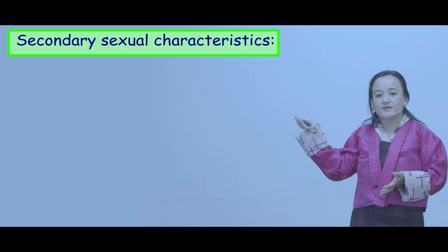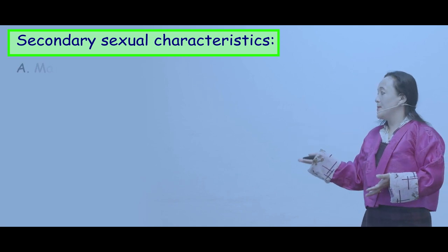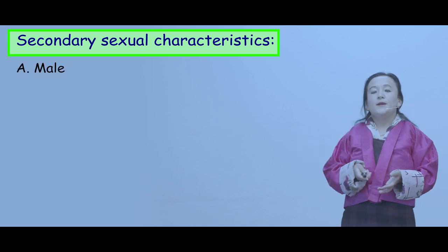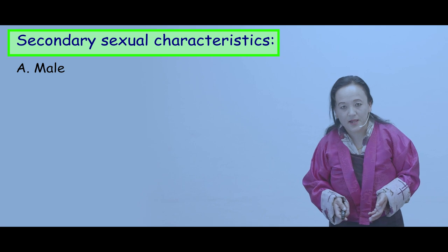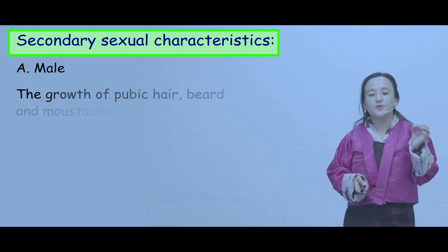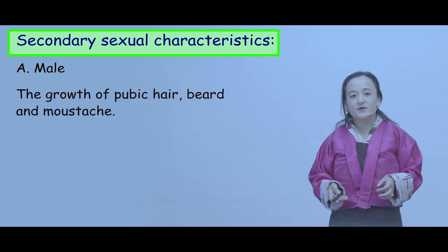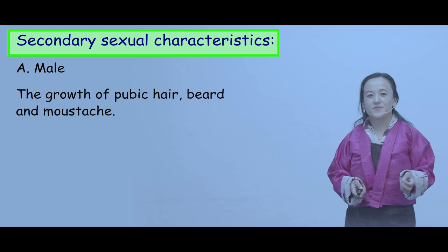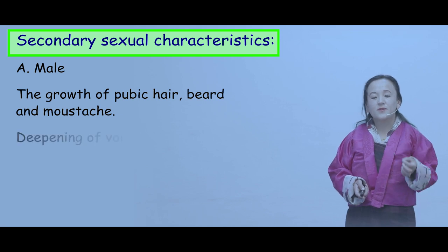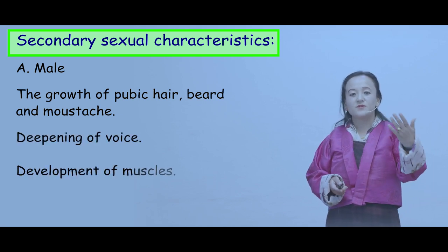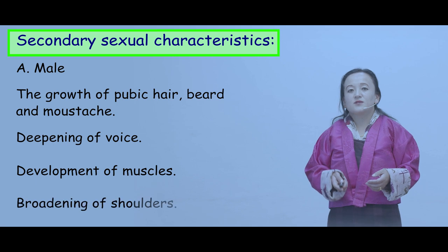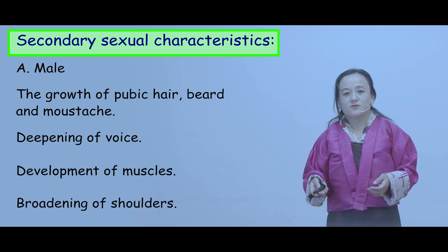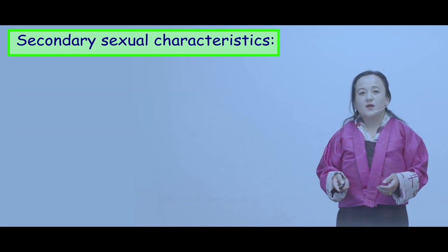Let us look at some of the secondary sexual characteristics in the male. These include the growth of pubic hair, beard and mustache, deepening of voice, development of muscles, and broadening of shoulders.